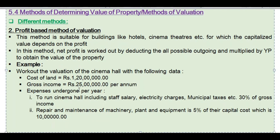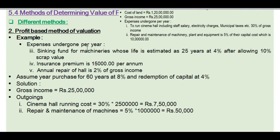The machinery and plant equipment capital cost is 10 lakhs. Repair and maintenance is 5% of the capital cost of machinery equipment. Sinking fund for machinery whose life is estimated as 25 years and for the building 60 years, at 4% interest after allowing 10% scrap value.